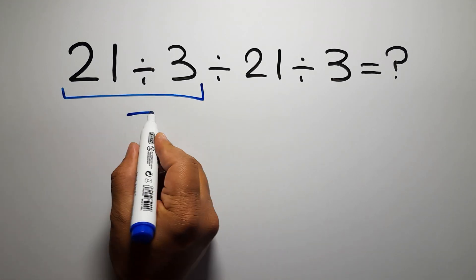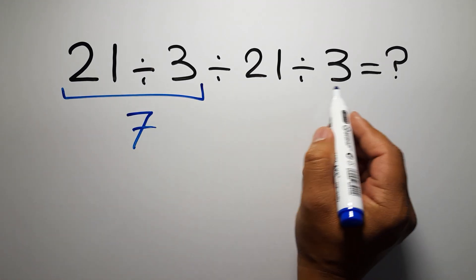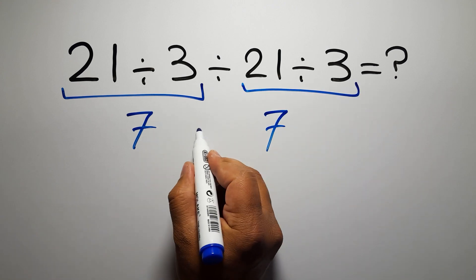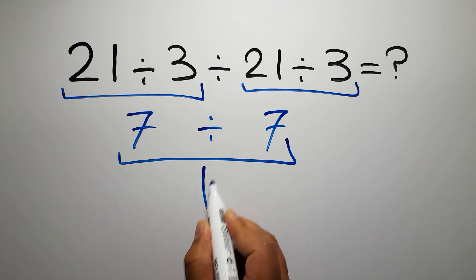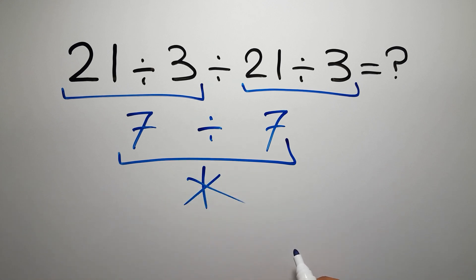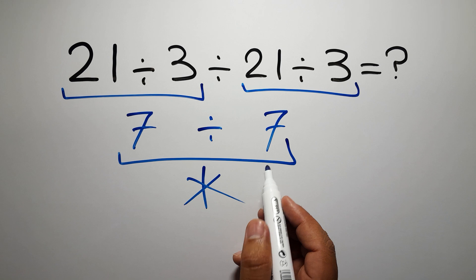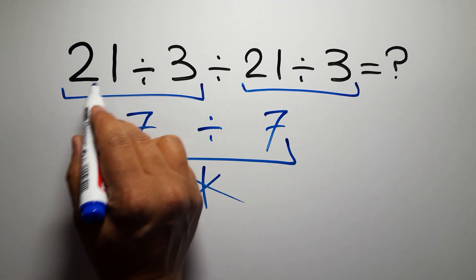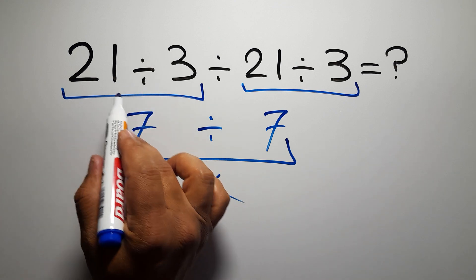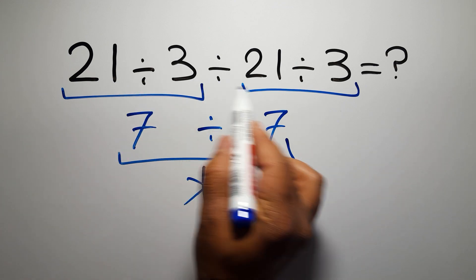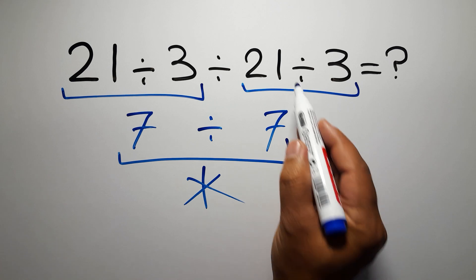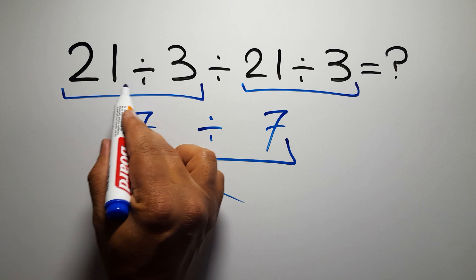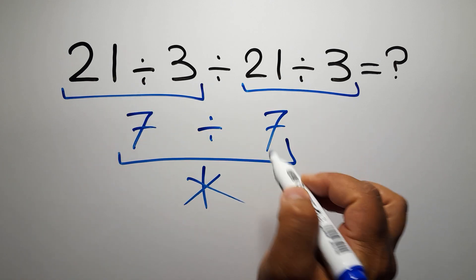21 divided by 3 gives us 7, and again here we have 21 divided by 3, so 7 divided by 7 is just 1. But this answer is not correct, because according to the order of operations, when we have more than one division in an expression, we have to work from left to right. So first we have to do this division, then this division — not this division. If you do this division before this division, it is wrong.